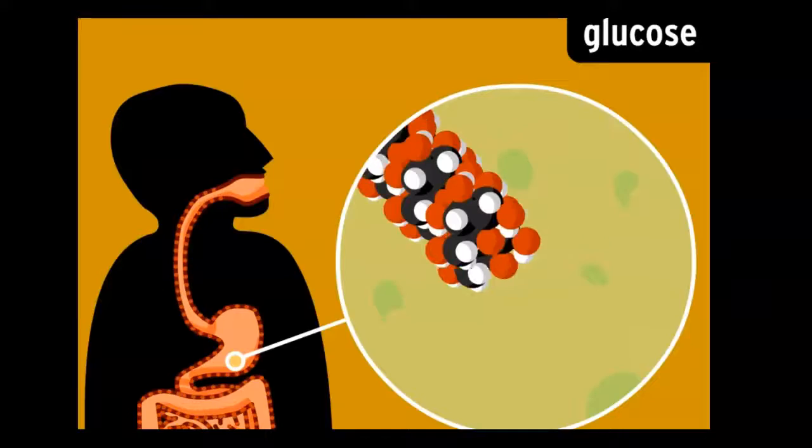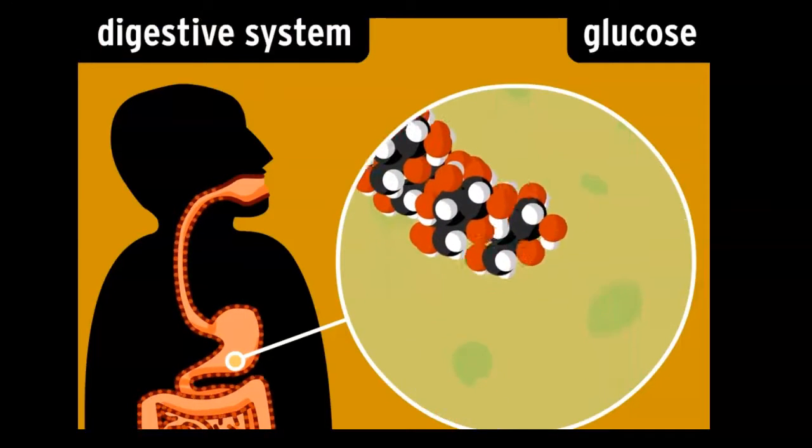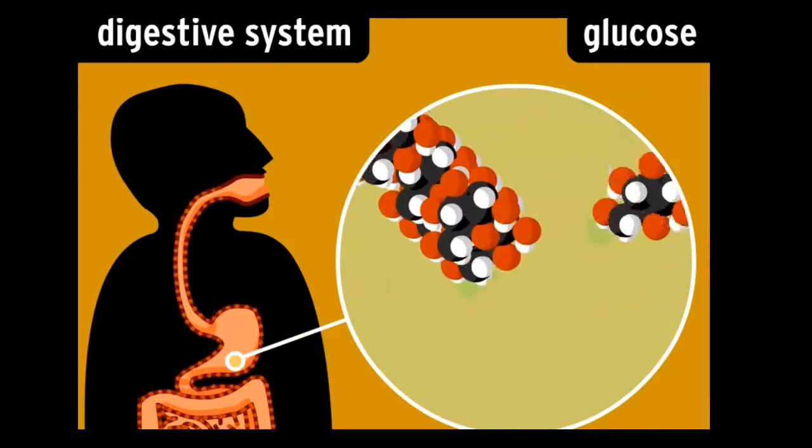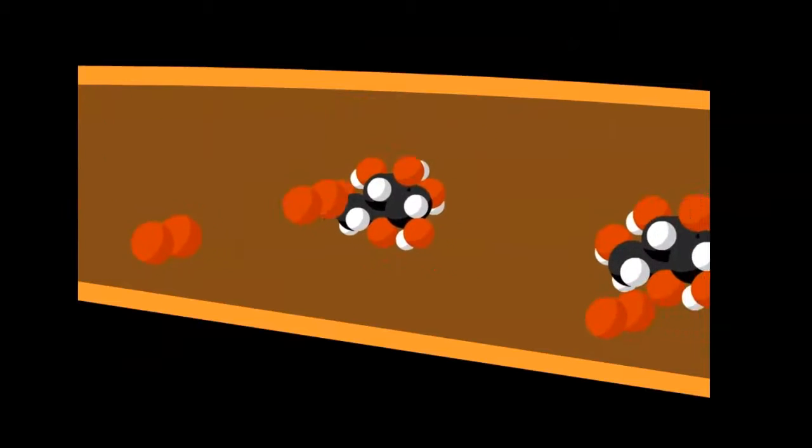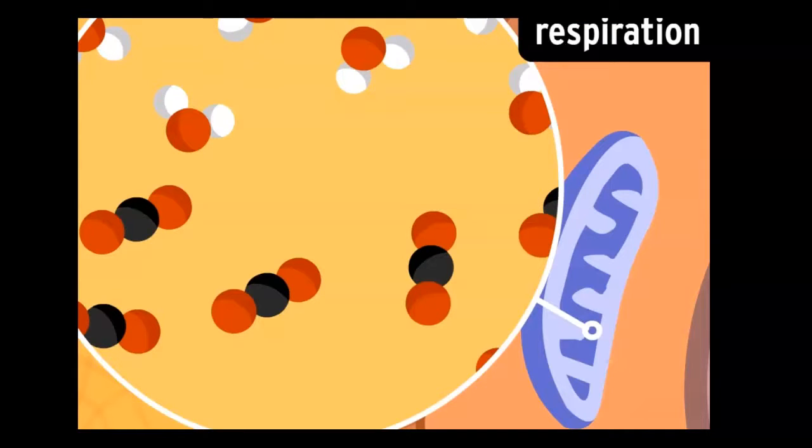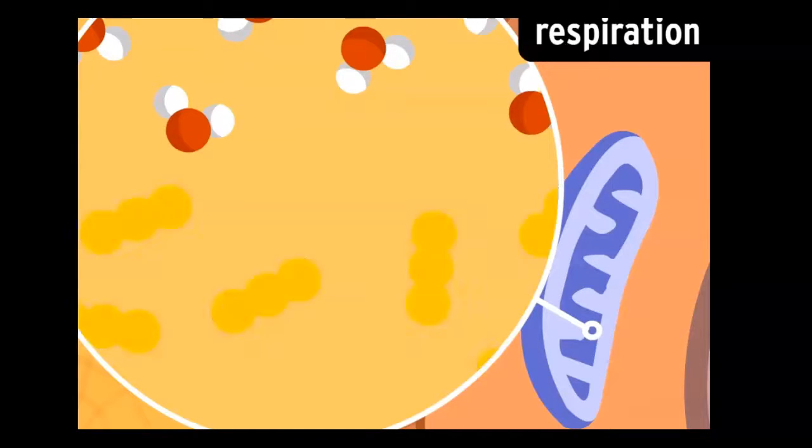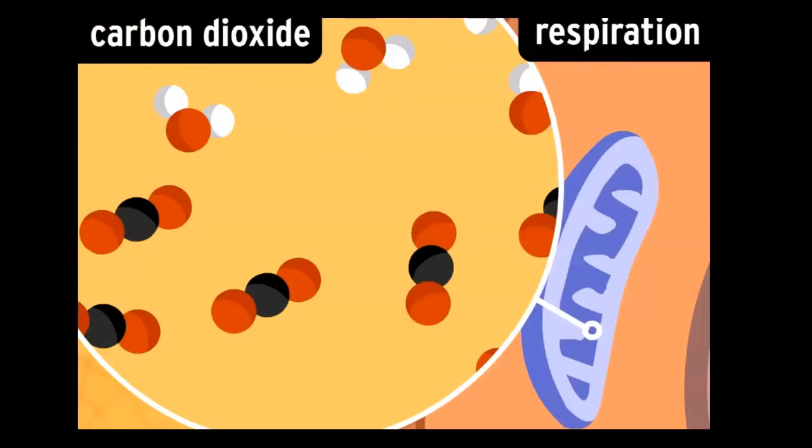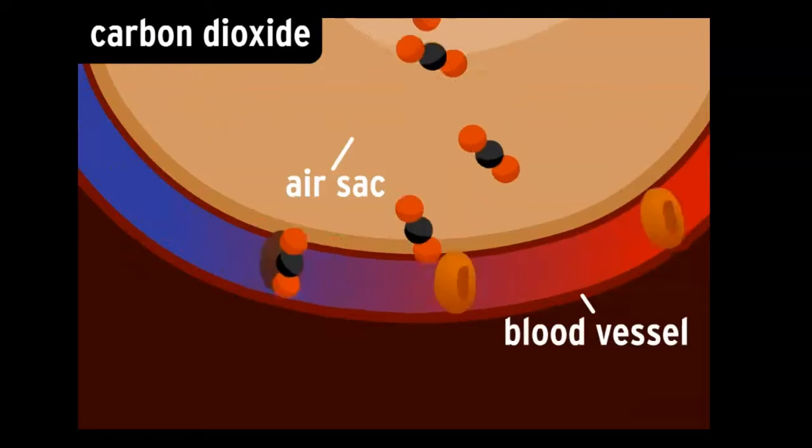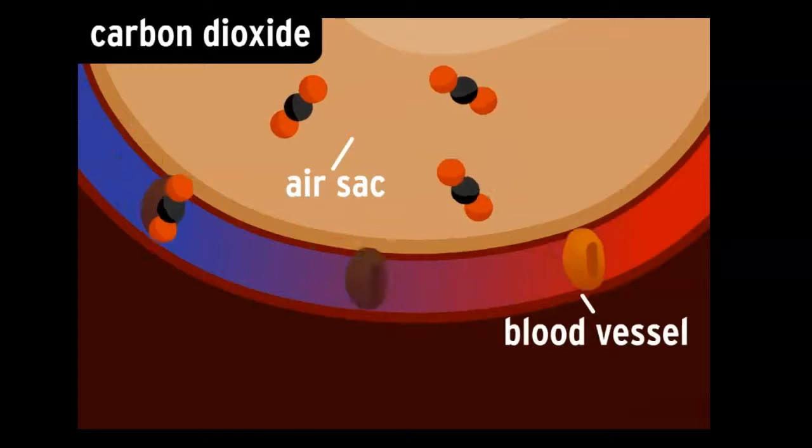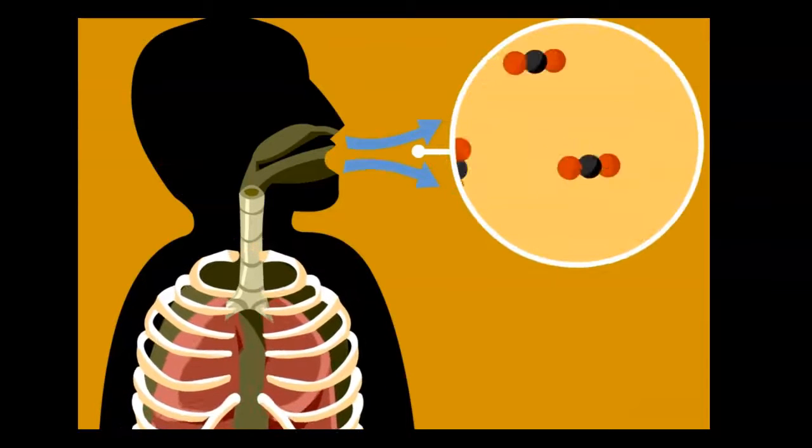We use oxygen to process glucose, a simple sugar that provides all the energy cells need to function. All day long, your digestive system is busy breaking down food and turning it into glucose to power your cells. Glucose, along with oxygen from your lungs, is delivered to your cells through your bloodstream. Inside tiny cellular structures called mitochondria, these substances undergo a chemical reaction called respiration. When the reaction is complete, three things are left over: an energy-packed molecule called ATP, water, and the waste gas carbon dioxide. Your cells expel the carbon dioxide into your blood, which carries it to your lungs. When you breathe out, you're exhaling this carbon dioxide.